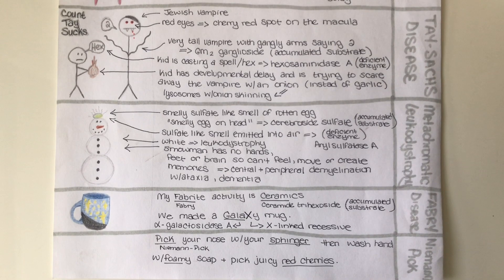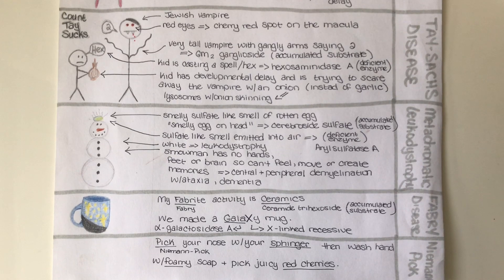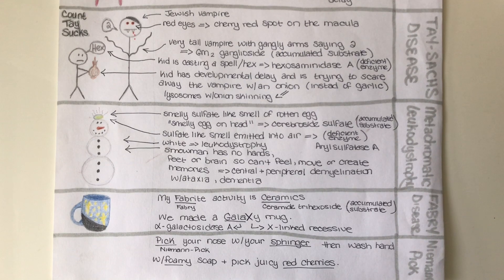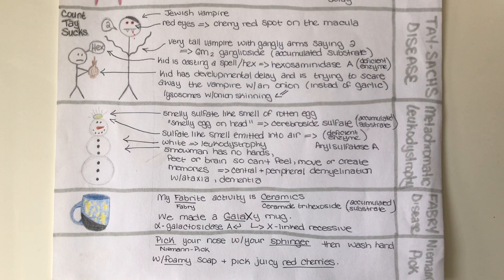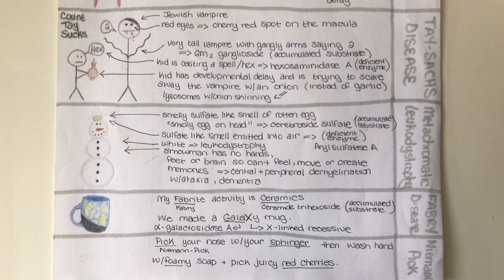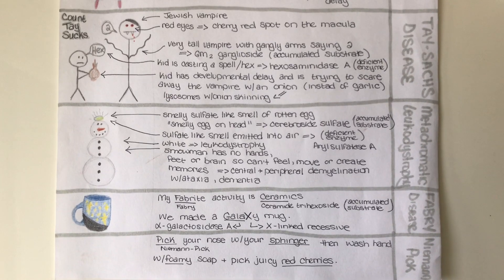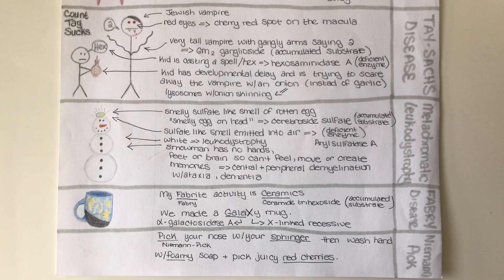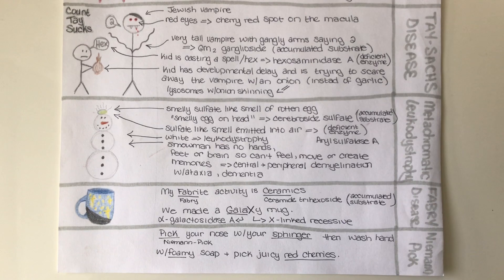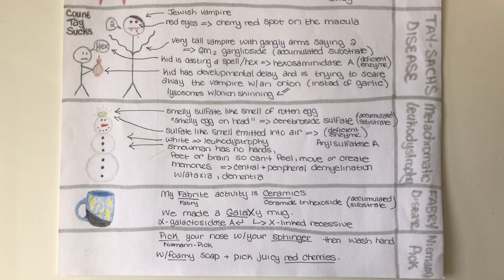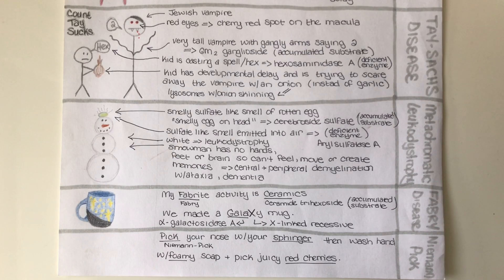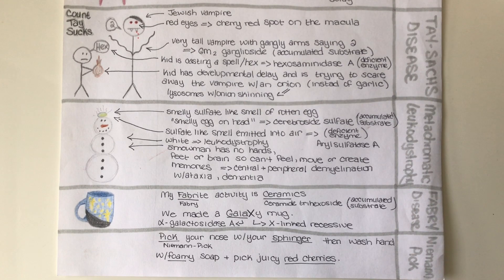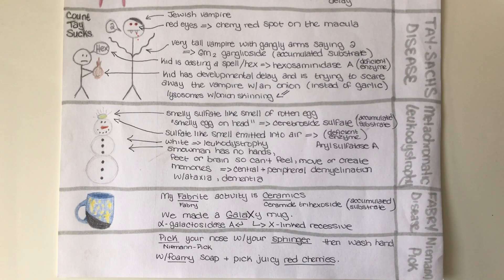Next is Fabry disease, illustrated with a ceramic mug with a galaxy design. The phrase 'my favorite activity is ceramics, we made a galaxy mug' helps break it down: favorite reminds us of Fabry disease, ceramics reminds us of the accumulated substrate ceramide trihexoside, and galaxy reminds us of the deficient enzyme alpha-galactosidase A, and also that Fabry disease is the only X-linked recessive one among the six sphingolipidoses listed.